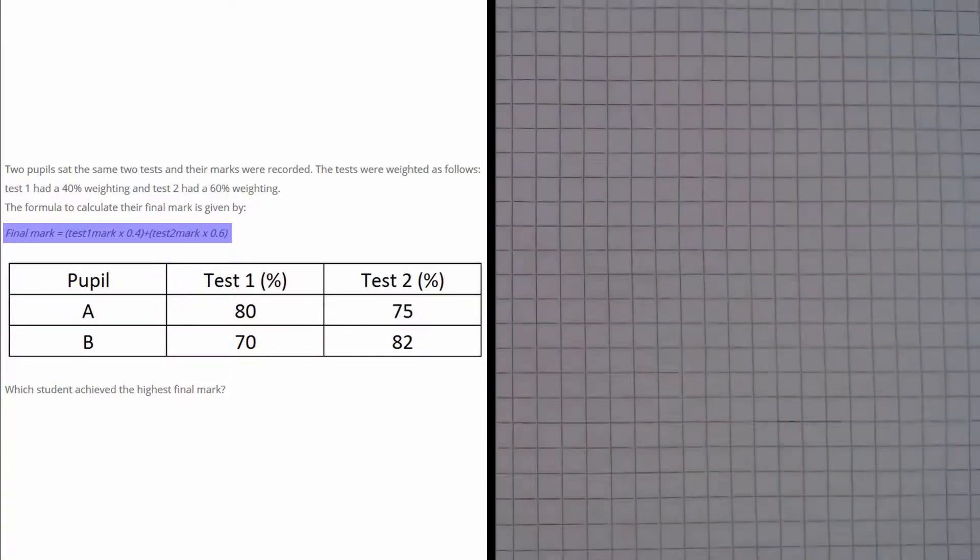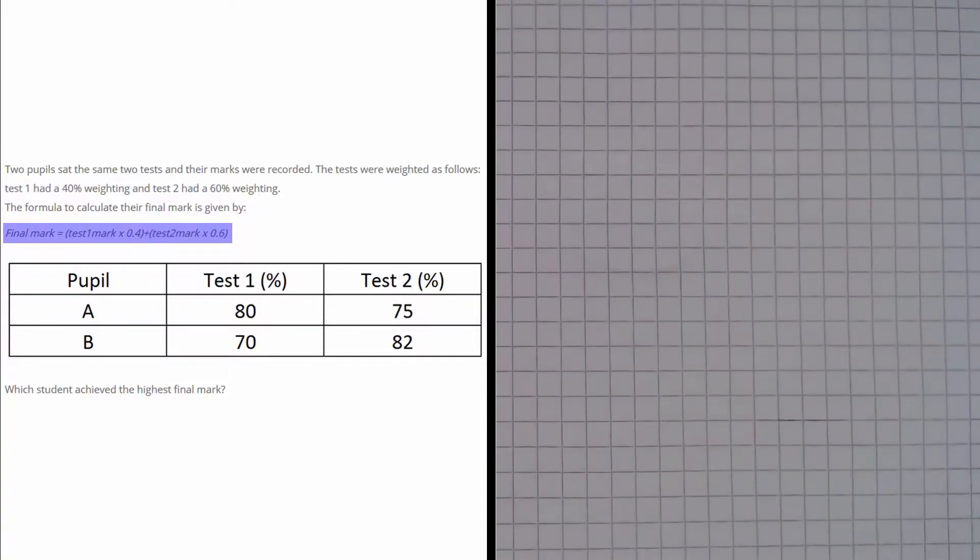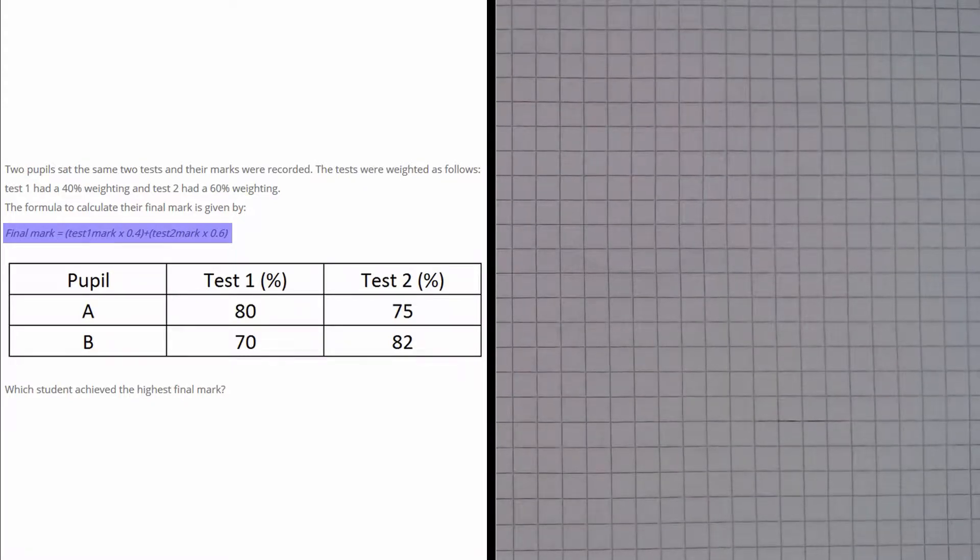In this question we are given a table that specifies the test 1 and test 2 percentage marks of two pupils. We are given that test 1 has a 40% weighting and test 2 carries a 60% weighting. The question asks us to identify the student that had the highest final mark.